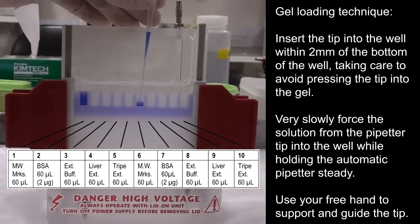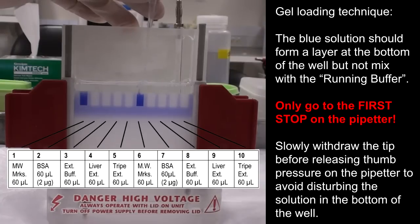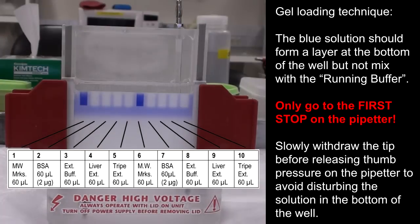Very slowly, force the solution from the pipetter tip into the well while holding the automatic pipetter steady. Use your free hand to support and guide the tip. The blue solution should form a layer at the bottom of the well but not mix with the running buffer.